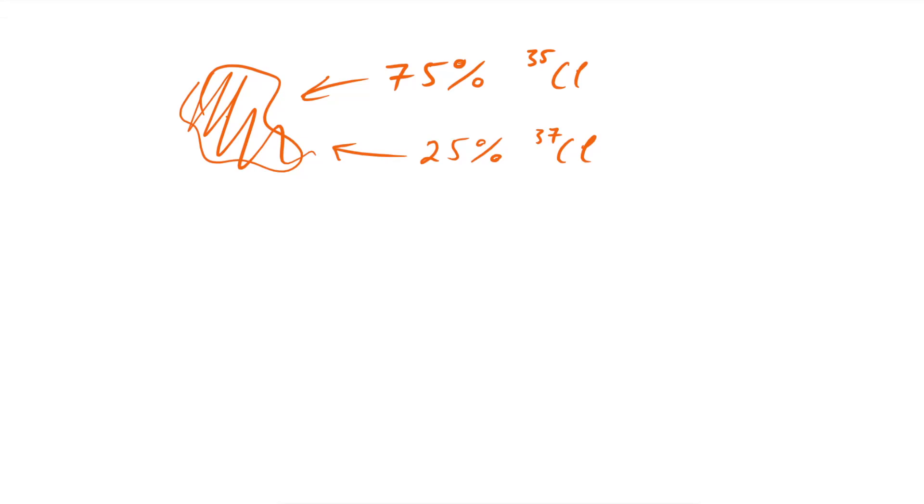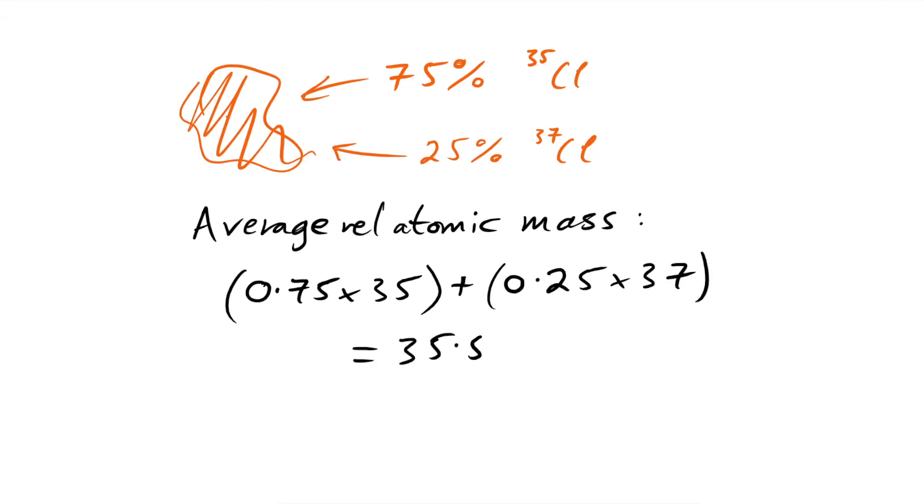So what is the relative atomic mass of this chlorine? We can calculate it by doing 0.75 times 35 - that's just the percentage as a decimal - plus the same for the chlorine-37. And lo and behold, we end up with 35.5.